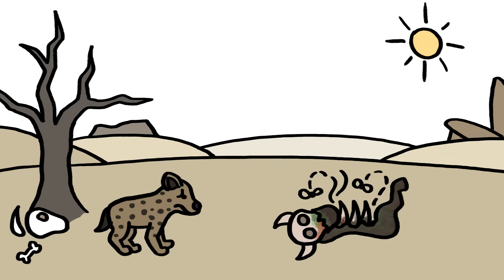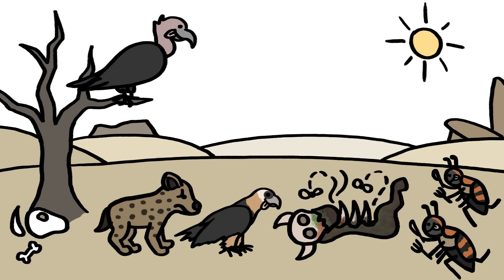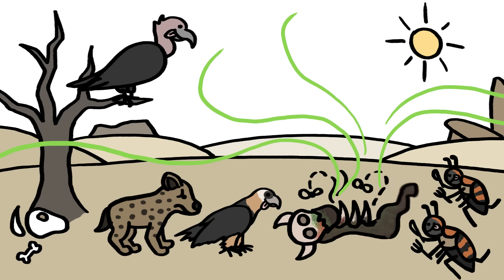But sometimes, severely rotten flesh is the only item on the menu. And some scavengers, such as burying beetles and vultures, actually seek out putrid carrion because it's easier to detect, dig into, and defend.